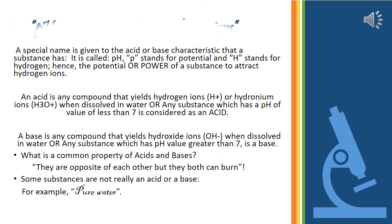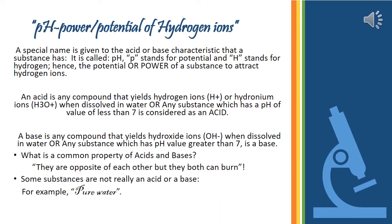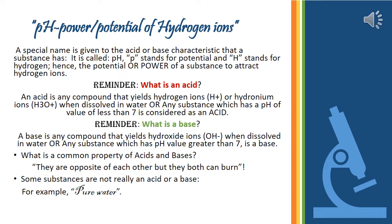pH — here P stands for power or potential and H for hydrogen. Hence, it is the potential of a substance to attract hydrogen ions. An acid is a substance that yields hydronium ions when dissolved in water, or any substance which has a pH value less than 7.